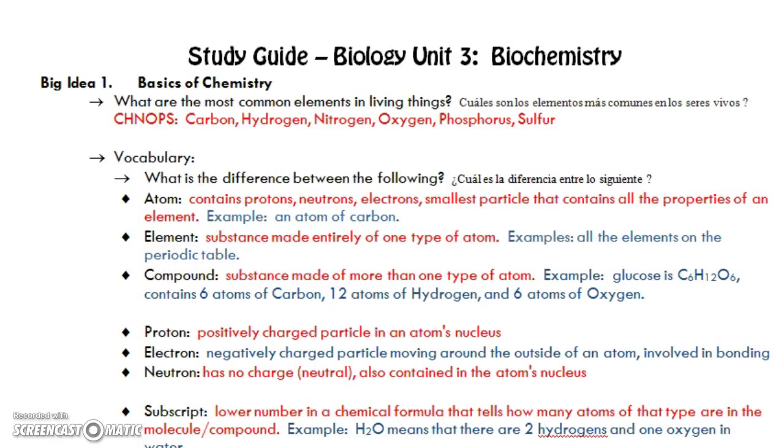Here's some help with biochemistry to get you ready for the next test. So the very first big idea is some basics. The most common elements in living things, there are six of them, and we abbreviate that with an acronym called either CHNOPS or CHONPS.